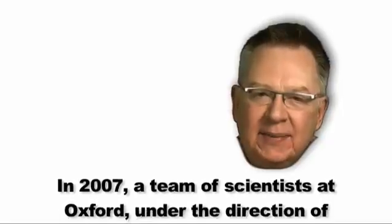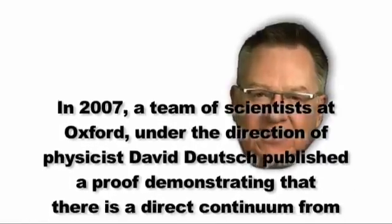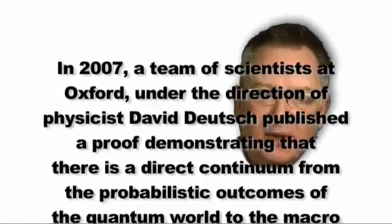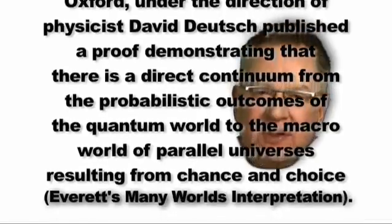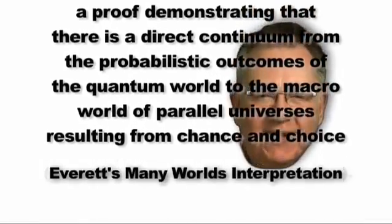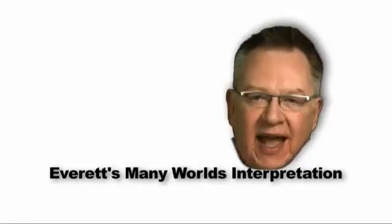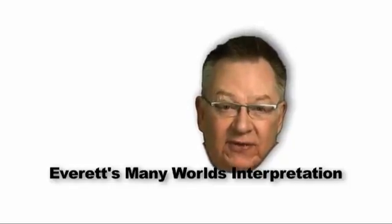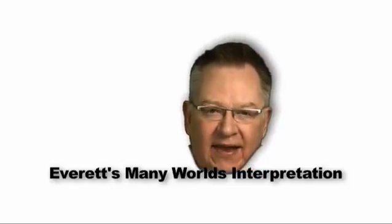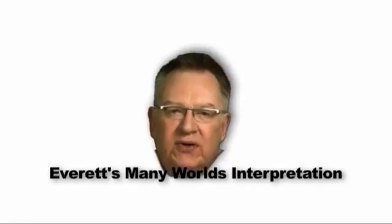Here's another continuum that I believe ties into this way of visualizing. In 2007, a team of scientists at Oxford under the direction of physicist David Deutsch published a proof demonstrating that there is a direct continuum from probabilistic outcomes of the quantum world to the macro world of parallel universes resulting from chance and choice, which is Everett's many-worlds interpretation. If every decision I make, every decision someone else makes, and every random outcome — where no one made a choice but something just happened — are all creating different versions of our universe, this seems like a mind-boggling amount of universes for us to be asked to imagine. And yet, the many-worlds interpretation is gaining ground among serious scientists because it answers so many other questions about how our universe works.